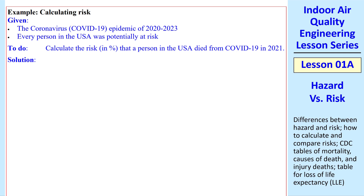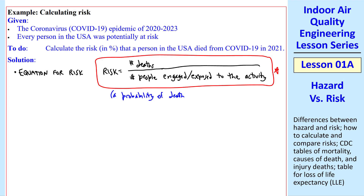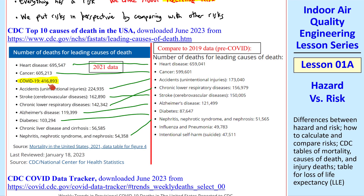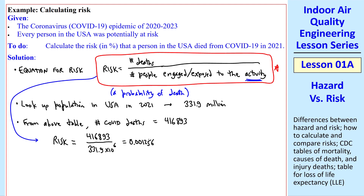Let's do an example problem — how to calculate risk. We'll talk about COVID-19. Every person in the USA was potentially at risk, so let's calculate the risk in percent that a person in the USA died from COVID-19 in 2021. Risk is the number of deaths divided by the number of people engaged or exposed to the activity — it's a probability of death due to the activity or disease. The population of the USA in 2021 was about 332 million, and the number of COVID deaths was about 417,000. Using the formula, we get 0.001256, or about 0.13% risk — a chance of 1.3 per thousand.